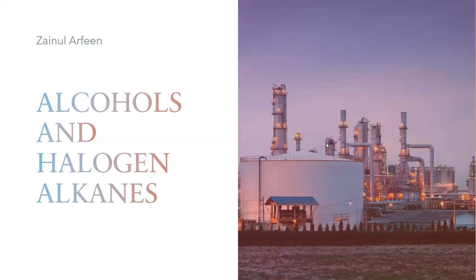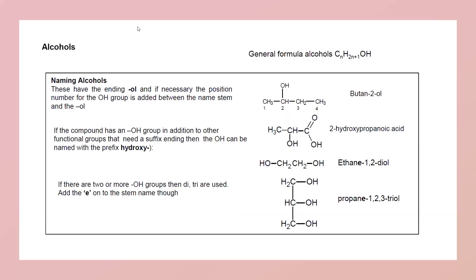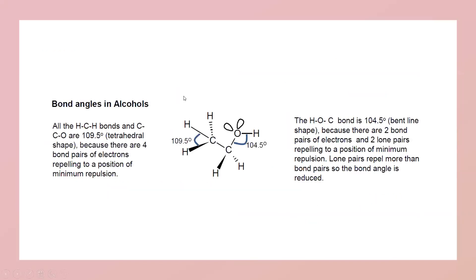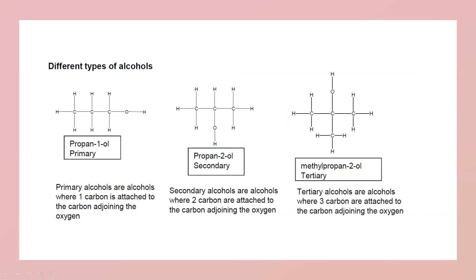This is a continuation of the topic on alcohols and halogenoalkanes. Yesterday we started the topic on alcohols, discussing how we can name them depending on position. The bond angle depends on how many bond pairs and lone pairs are present, so on the basis of the valence shell electron pair repulsion theory we can predict the bond angle and geometry of the molecule. Alcohol can also be classified as primary, secondary, or tertiary.